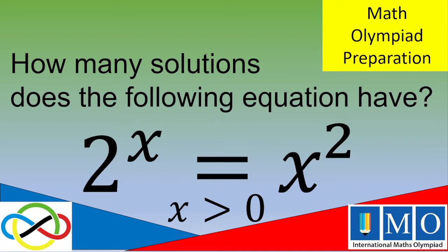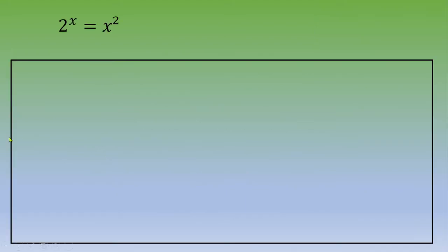So if you want to give it a try, please pause the video. Otherwise, let's see the solution. One way to solve that is to notice that these two quantities are greater than 0. 2^x is greater than 0 whatever the value of x, and x is greater than 0, so x^2 is also greater than 0.